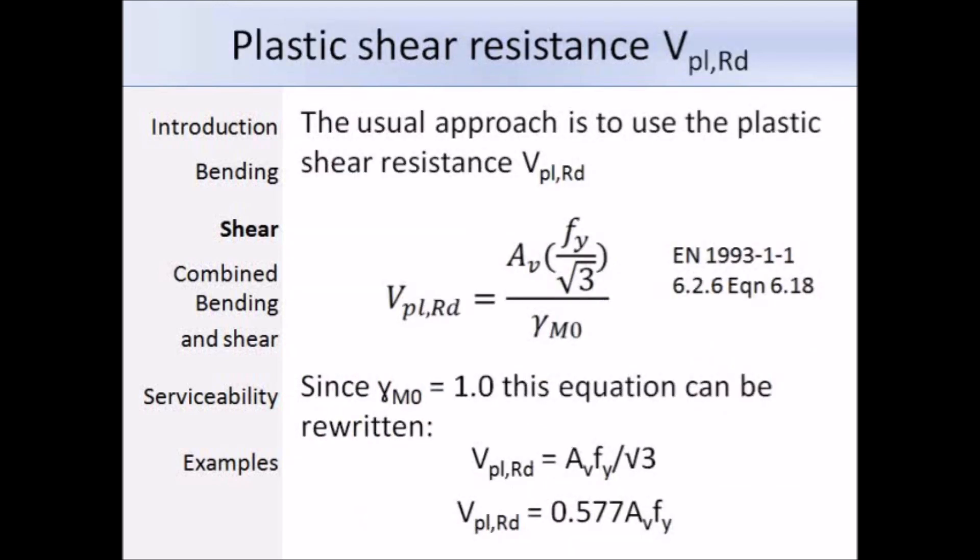As I said before, it is normal to use the plastic shear resistance V_pl,Rd, which is given by expression 6.18, and gamma M0 is equal to 1. So the equation can be simplified to the shear area times the yield stress over the square root of 3. As I said previously, 1 over the square root of 3 is roughly 0.577, therefore this form of the equation is not that dissimilar to the one used in BS5950.